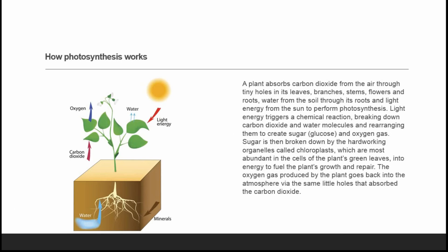How photosynthesis works: a plant absorbs carbon dioxide from the air through tiny holes in its leaves, branches, stems, flowers, and roots; water from the soil through its roots; and light energy from the sun to perform photosynthesis. Light energy triggers a chemical reaction, breaking down carbon dioxide and water molecules and rearranging them to create sugar and oxygen gas.